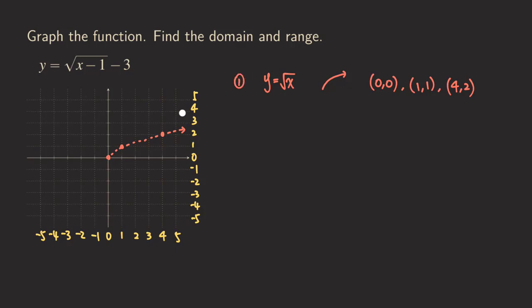I'm just going to label this one right here. So now the next step is to graph the one with the minus one inside the square root. So that means the second one is going to be y equals the square root of x minus one. The general shape doesn't change as you can see.